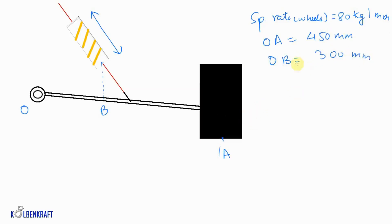So with this given data, we can calculate the spring rate of suspension as spring rate at the wheels multiplied by the distance OA by OB. We need to take the ratio of these two distances and multiply with the spring rate which is available at the wheels. Hence, 80 multiplied by 450 divided by 300. This will give us 133.33 kg per mm.